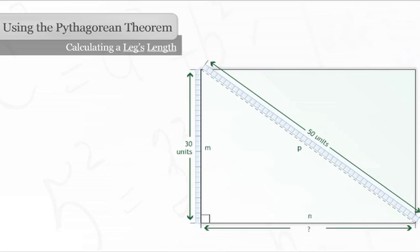Then we will plug the information we know into the Pythagorean theorem by substituting the values for M and P. Thirty squared plus N squared equals fifty squared, or nine hundred plus N squared equals twenty five hundred.